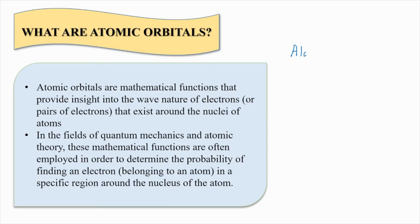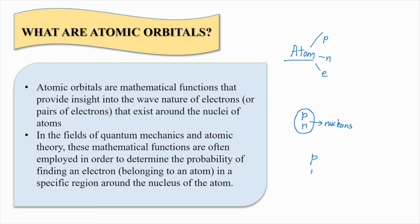So whenever I am talking about an atom, there are three important subatomic particles I need to address. Those are protons, neutrons and electrons. The protons and the neutrons are a part of the nucleus. That is the reason why they are also known as nucleons because they are inside the nucleus. So I have a proton and a neutron, both of them are inside a nucleus, and electrons are outside the nucleus which follow a proper path.